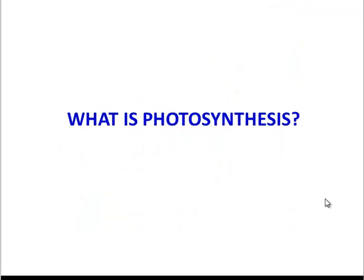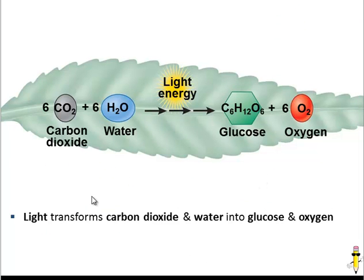Let's start by defining it. Photosynthesis is simply the conversion of carbon dioxide and water into glucose and oxygen, and this conversion is powered by energy from the sun.